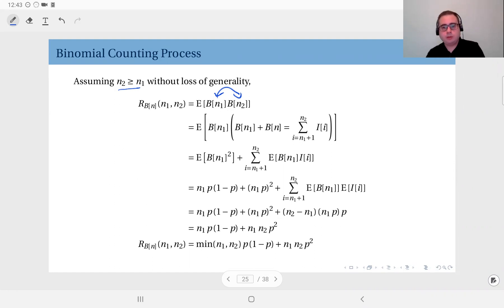from time index 1 up to n1, and b of n2, as the definition implies, is the sum of iid Bernoulli trials from 1 up to n2.